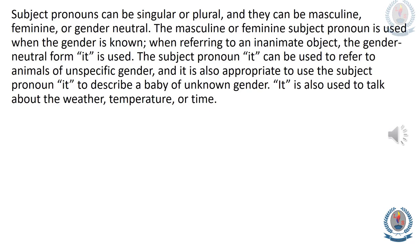Subject pronouns can be singular or plural, and they can be masculine, feminine, or gender neutral. The masculine or feminine subject pronoun is used when the gender is known. When referring to an inanimate object, the gender neutral form 'it' is used. The subject pronoun 'it' can be used to refer to animals of unspecific gender, and it is also appropriate to use 'it' to describe a baby of unknown gender. It is also used to talk about the weather, temperature, or time.